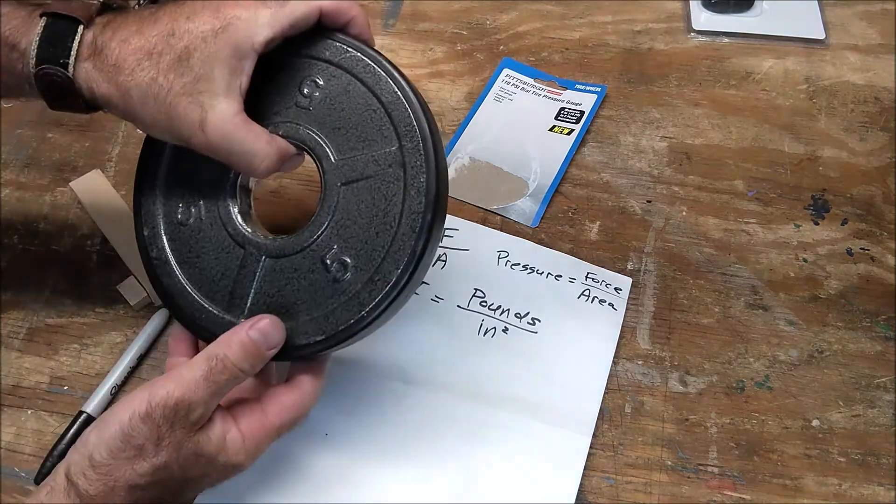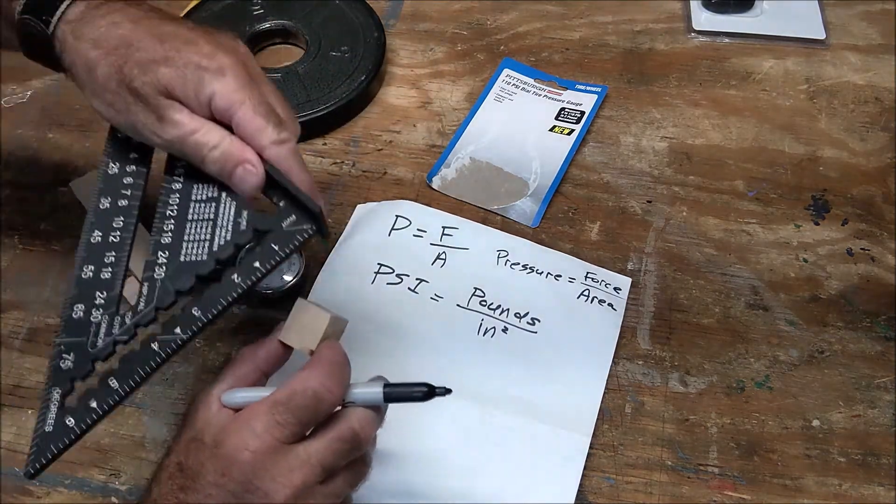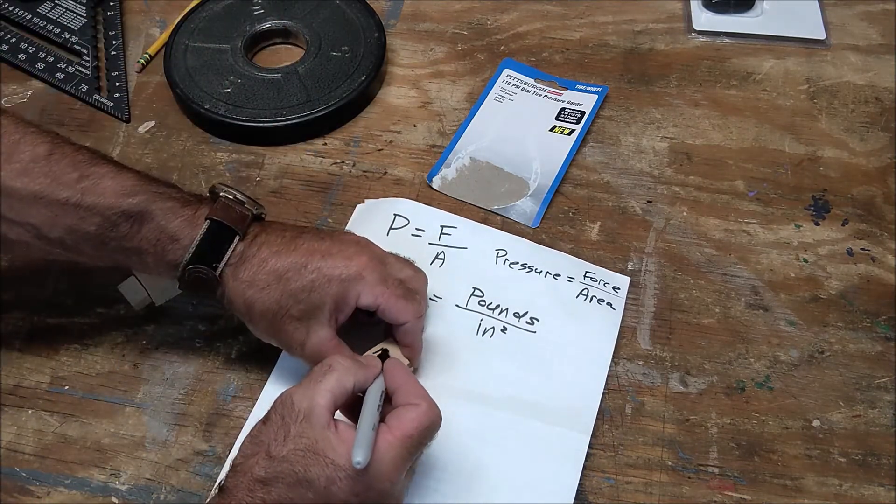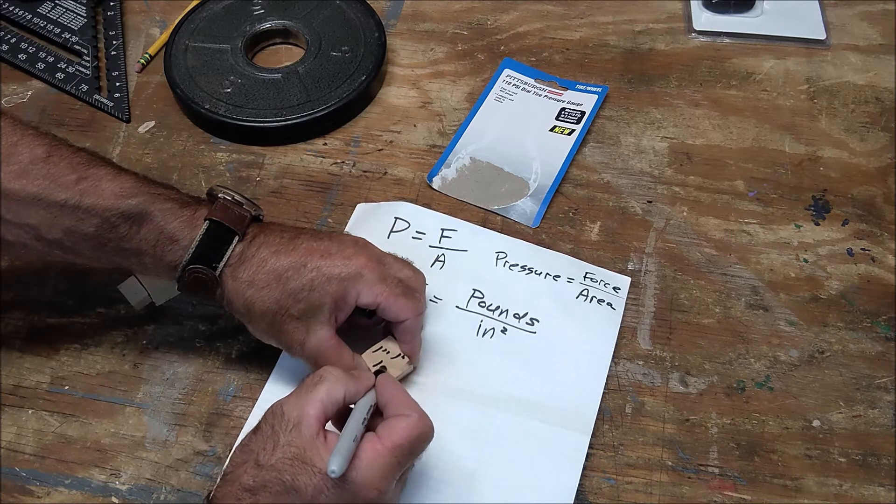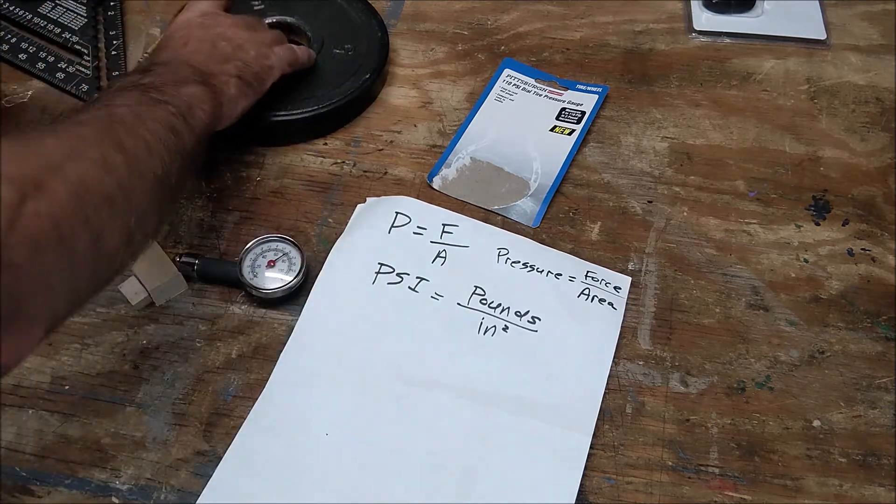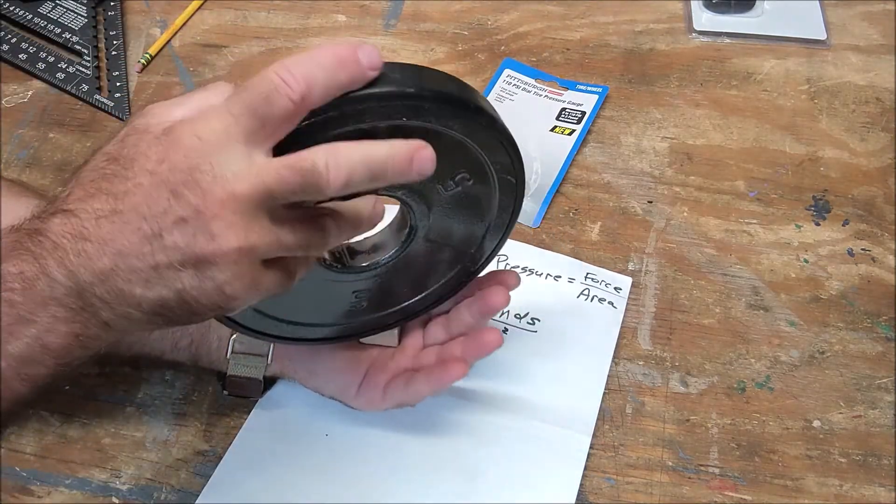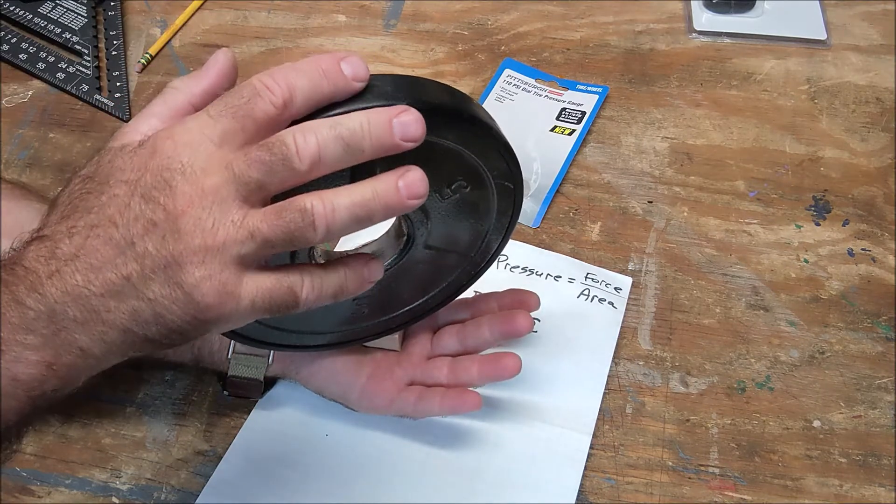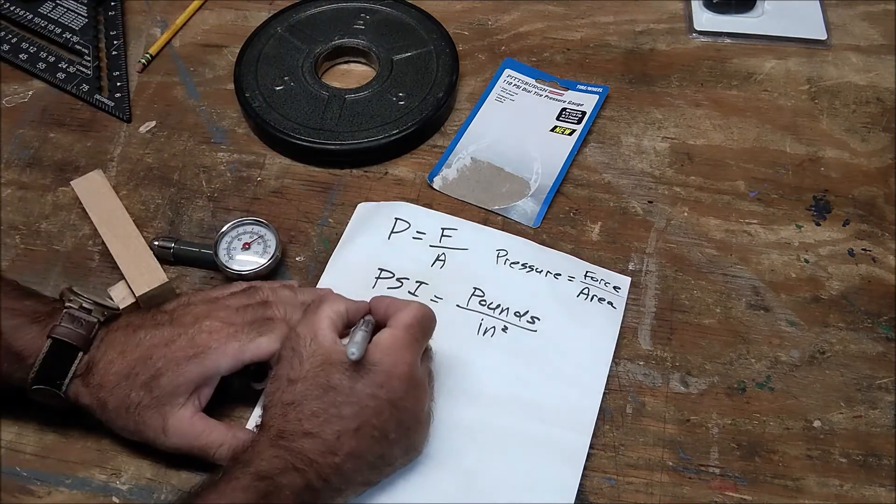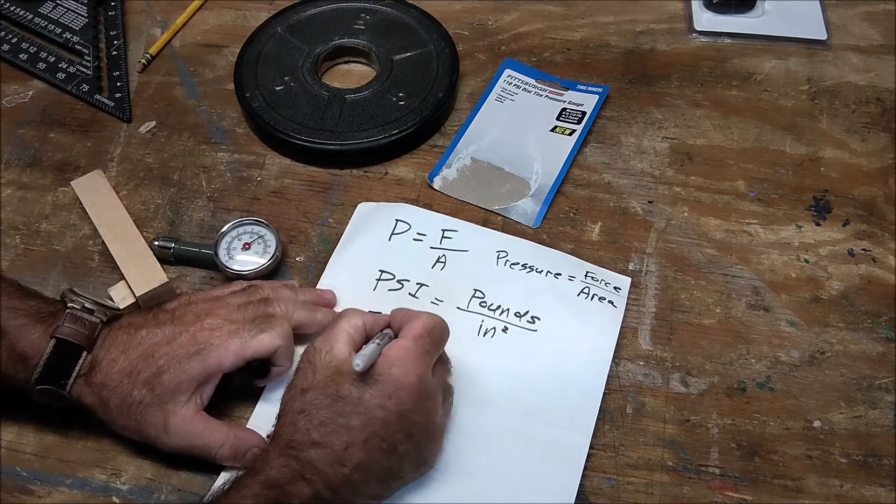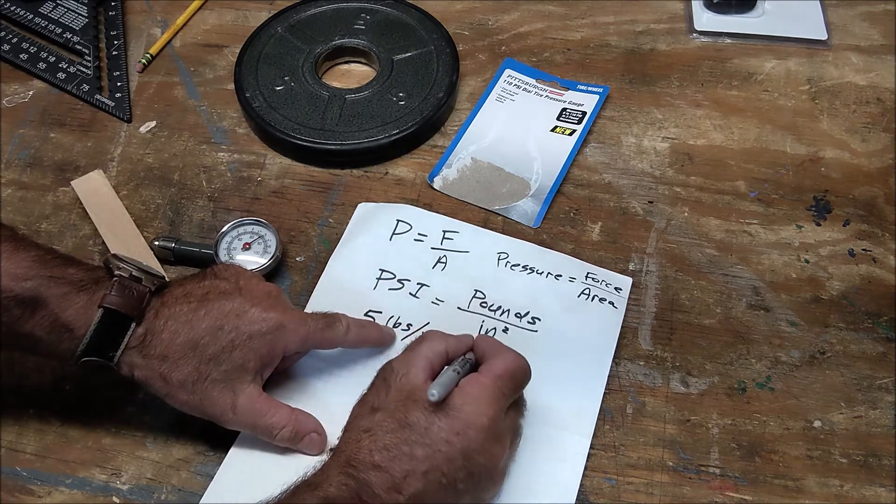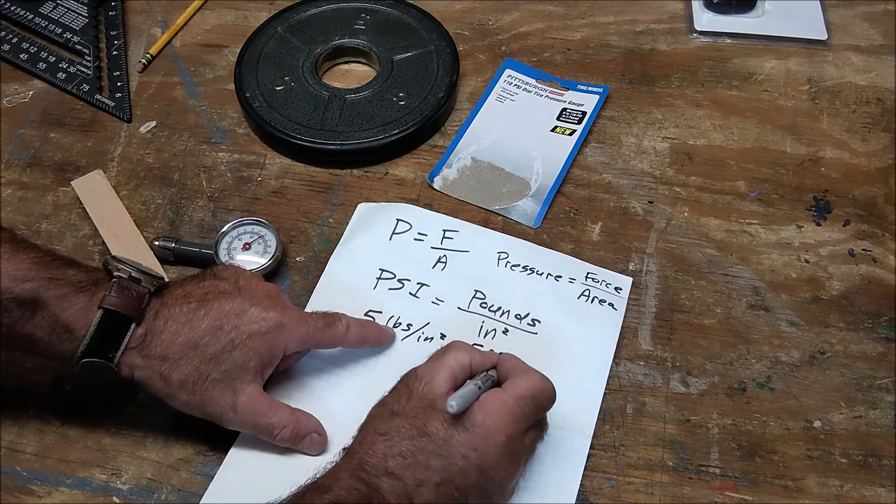Here's a five pound weight. Here's a block which if I measure that block it's one inch by one inch. So the area of that square is one times one or one square inch. And if I put that on my hand the pressure going down onto my hand is five pounds per square inch. All right because it's a five pound weight. So it's five pounds per one square inch or five pounds per square inch or five psi pounds per square inch.